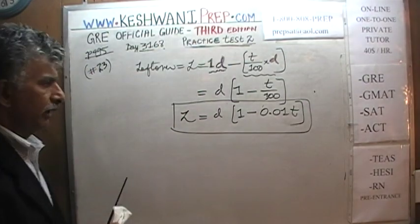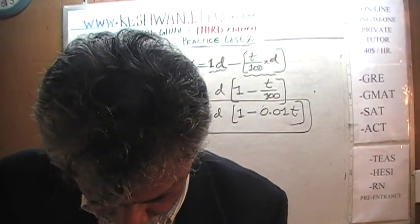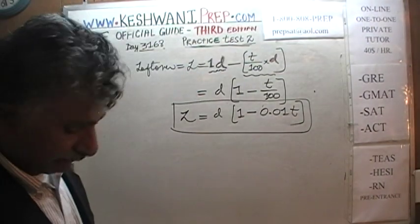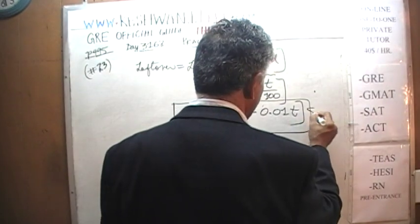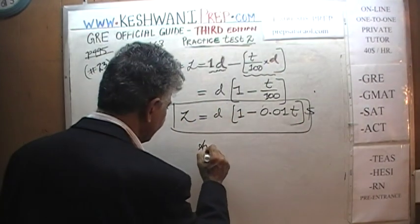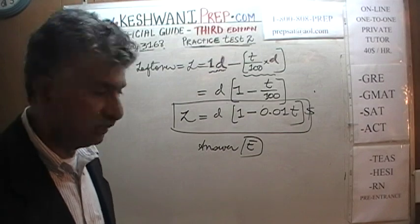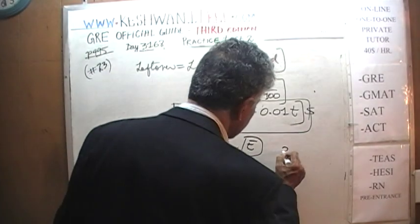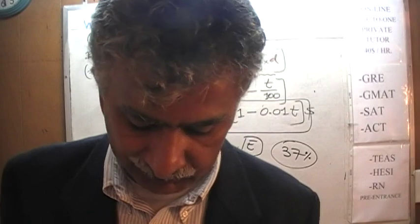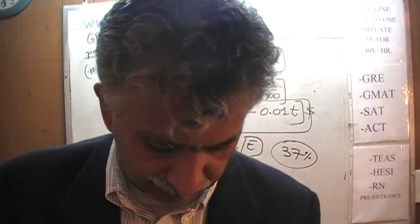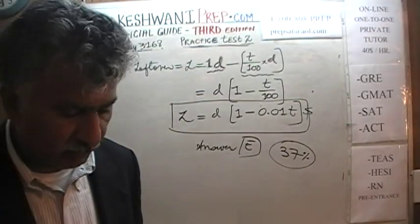The letter L represents the amount of money that she has left over. We are going to go through the answer choices and see which one matches. D times 1 minus 0.01T dollars. That's answer choice E. The answer is E. Only 37 percent of people got it right. The rest had trouble with it.